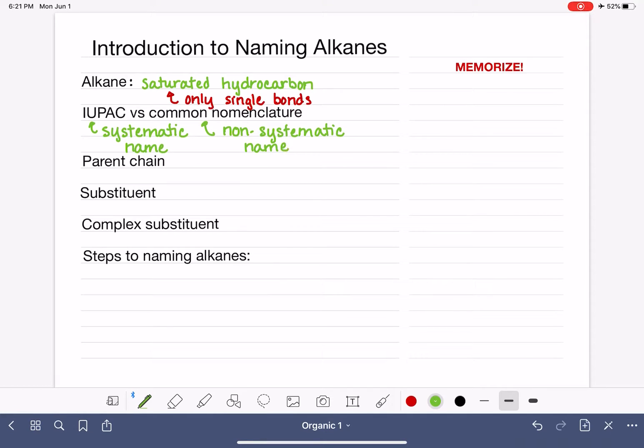And in a nutshell, what this means is that basically you have to memorize it. Because the name, because it's non-systematic, the name just kind of doesn't make sense. Fortunately, we don't do a lot of common naming. We only use common names for molecules when it is the most prevalent form of the name of the molecule.